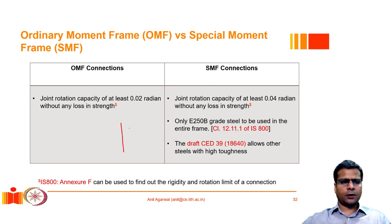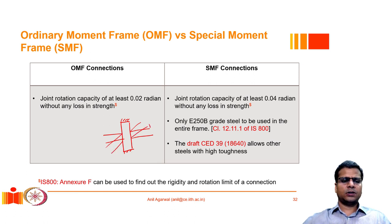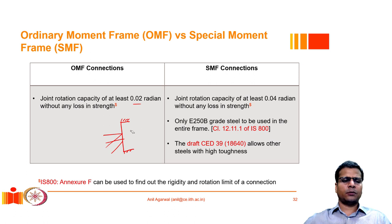To understand what 0.02 radians of rotation means: if a column is fixed at its base and a beam is connected to it, and the columns are very rigid so the beam moves, the beam should be able to move by an angle of 0.02 radians. This corresponds to 2% of the storey height — that is the level of plastic or overall deformation the connection must accommodate.